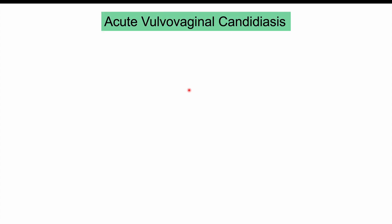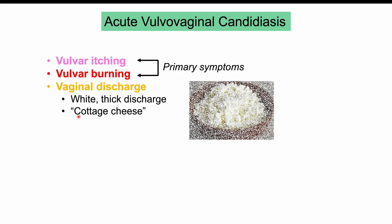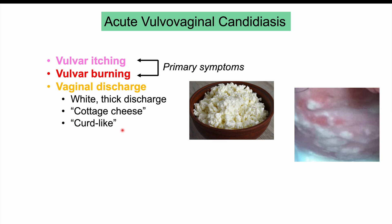The characteristic primary symptoms of acute vulvovaginal candidiasis are vulvar itching and vulvar burning. Vaginal discharge is also common and is typically white and thick — often described as cottage cheese-like or curd-like — a thick, adherent discharge that differs from other types of vaginal conditions.